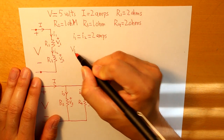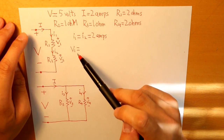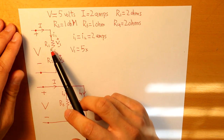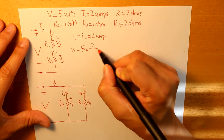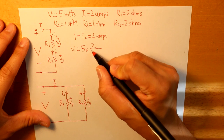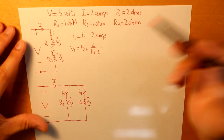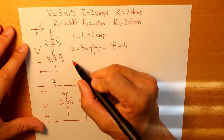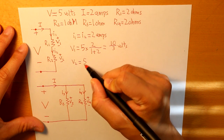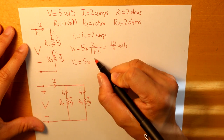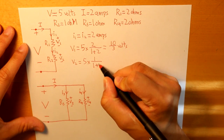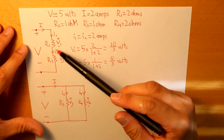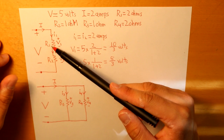To find V1, we take the total voltage — 5 volts — multiplied by R1 (which is 2 ohms), divided by R1 + R2 (which is 2 + 1 = 3). So V1 = 5 × 2 / 3 = 10/3 volts. For V2, we take the total voltage multiplied by R2 (which is 1 ohm), divided by R1 + R2 (1 + 2 = 3), giving us V2 = 5/3 volts. That is how we find the voltage within each resistor.